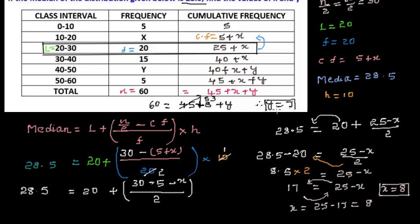Now we have found the values of x as well as y. This is how we find the missing frequencies when the frequency distribution table and the median are given. Thank you.